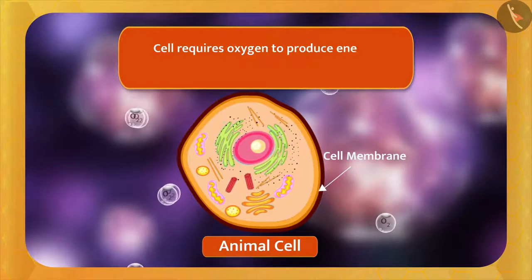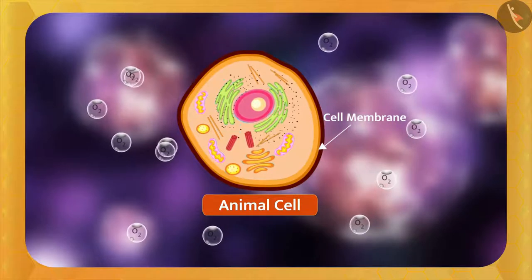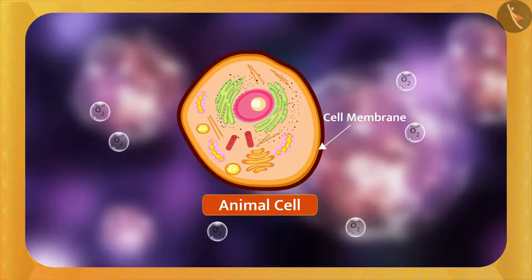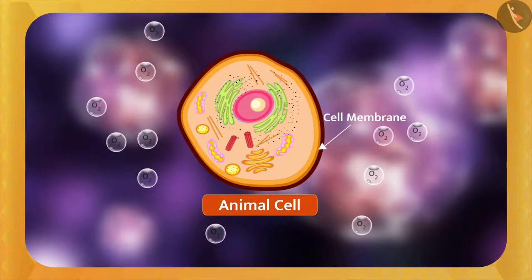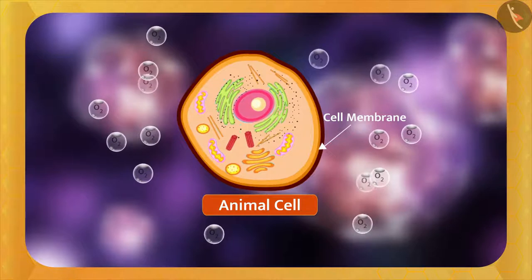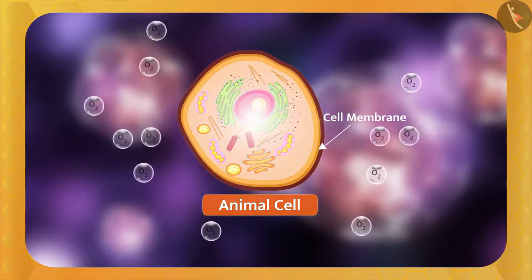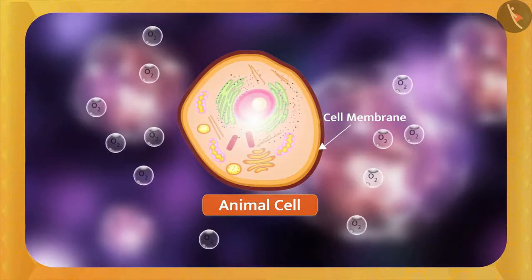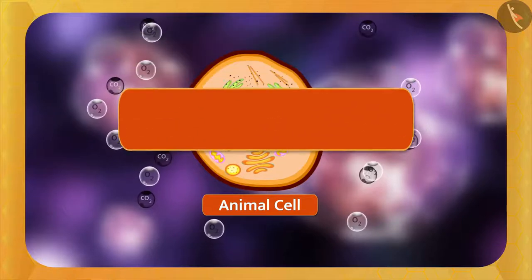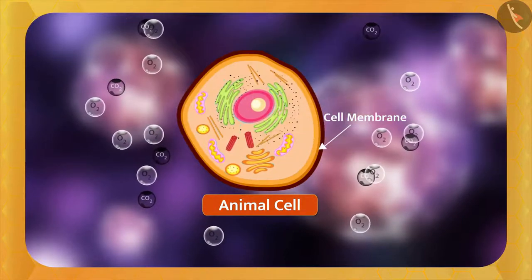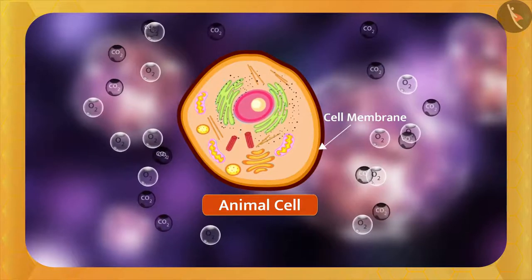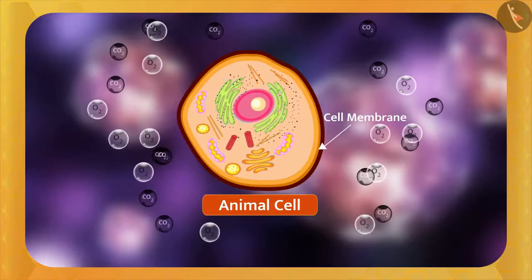For example, the cell requires oxygen to produce energy. When oxygen molecules reach the cell via the blood, the concentration of oxygen outside the cell is higher than inside, so diffusion occurs — oxygen molecules move from outside to inside. When the cell makes energy, carbon dioxide (CO2) is produced inside, where its concentration is higher than outside, so diffusion moves CO2 from inside to outside. This is how gases are transported in the cell.